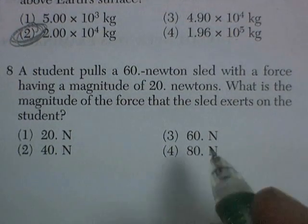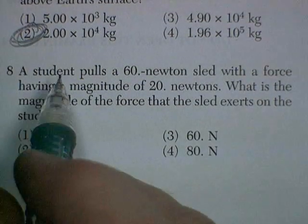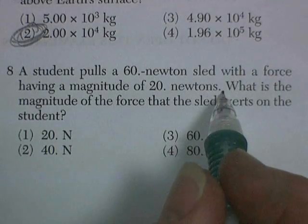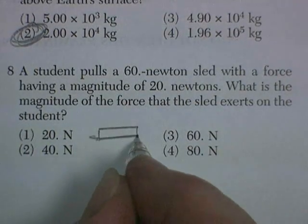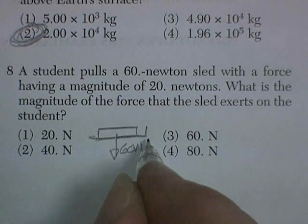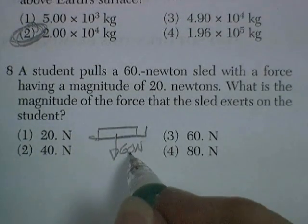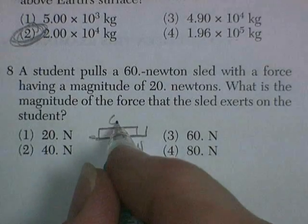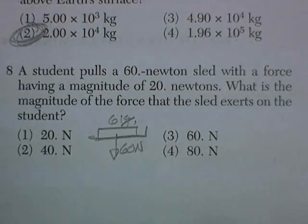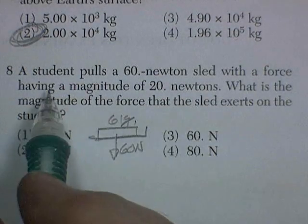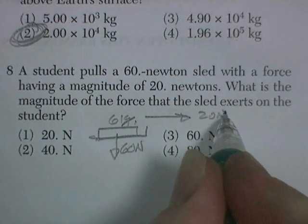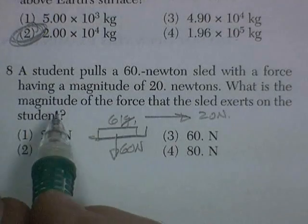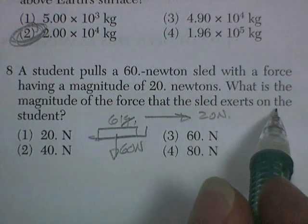A student pulls a 60-newton sled with a force having a magnitude of 20 newtons. All right. So 60 newtons is the weight of the sled. You could divide that by the acceleration due to gravity. It's going to have a mass of about 6 kilograms. And with a force of a magnitude of 20 newtons. So he's pulling with 20 newtons. He's not lifting the thing. He's just pulling it. What is the magnitude of the force that the sled exerts on the student? Okay.